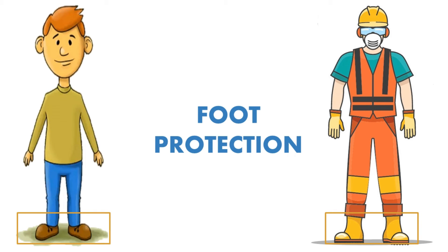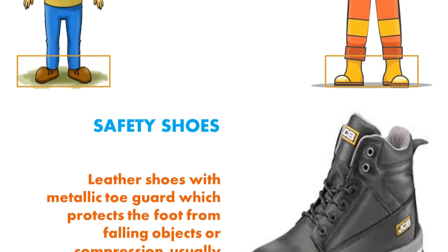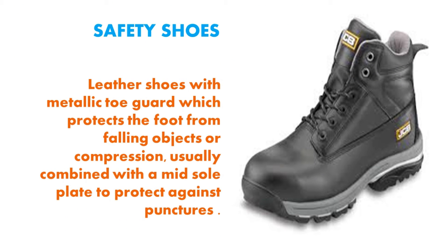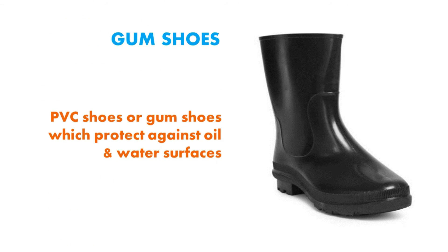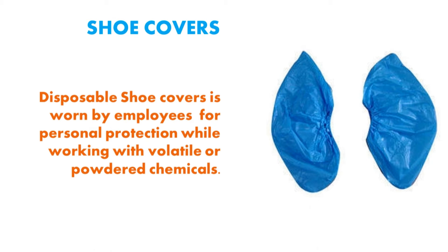Foot protection. Safety shoes are leather shoes with a metallic dual guard which protects the foot from falling objects or compressions, usually combined with a midsole plate to protect against punctures. PVC shoes or gum shoes protect against oil and water surfaces. Disposable shoe covers are worn by employees for personal protection while working with volatile or powdered chemicals.